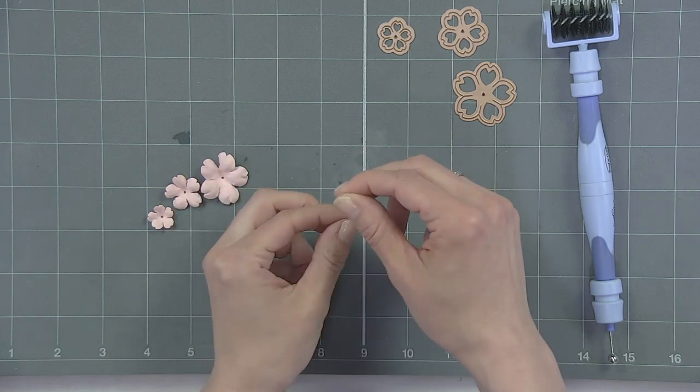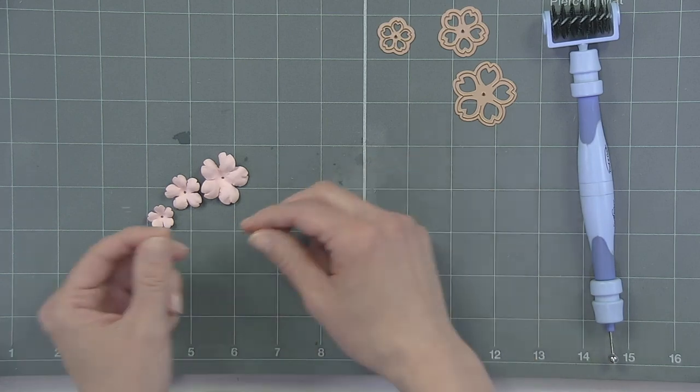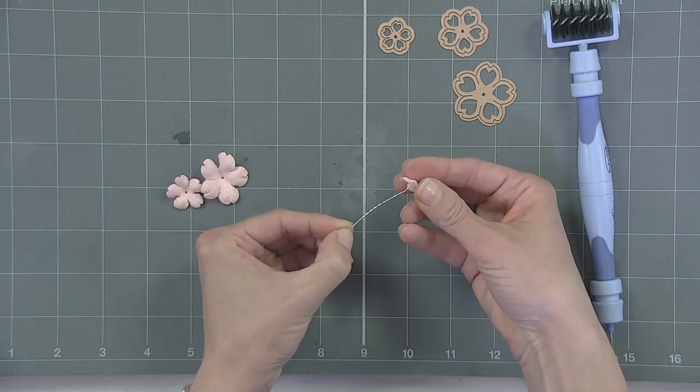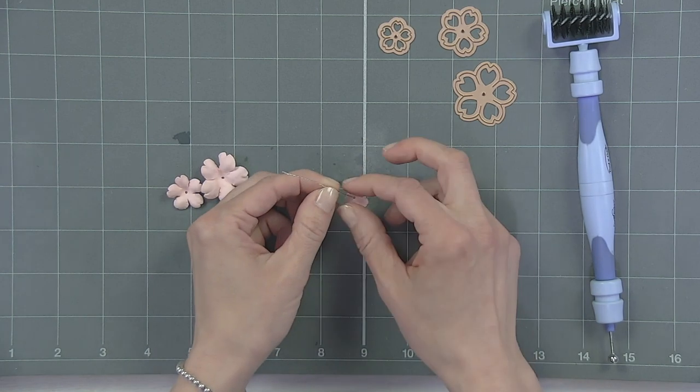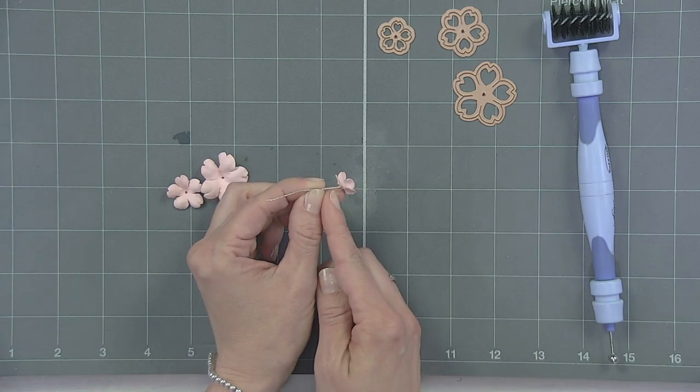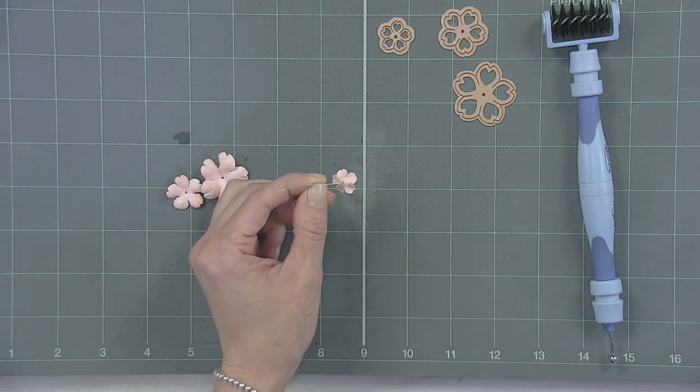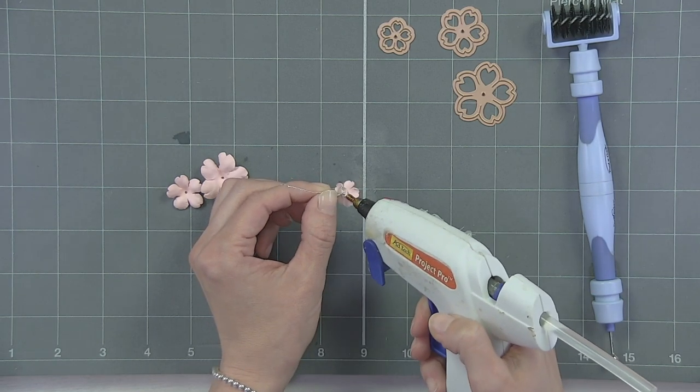So we will start with the smallest, of course, and we'll slide that on. Now you can use regular white glue. It works okay, but the hot glue gun gives it extra structure, but it also creates kind of a buffer between your first and second and third levels of flowers, which gives your flower a lot more dimension.